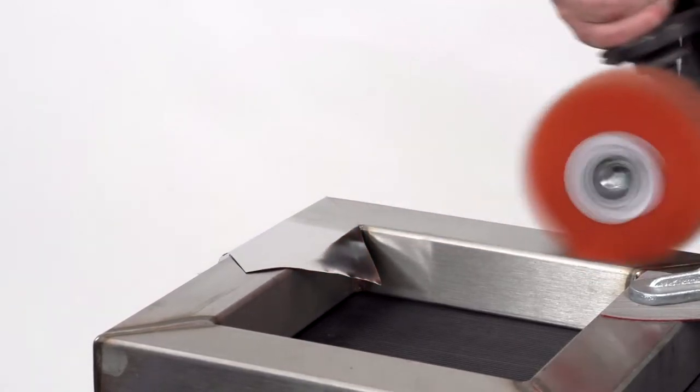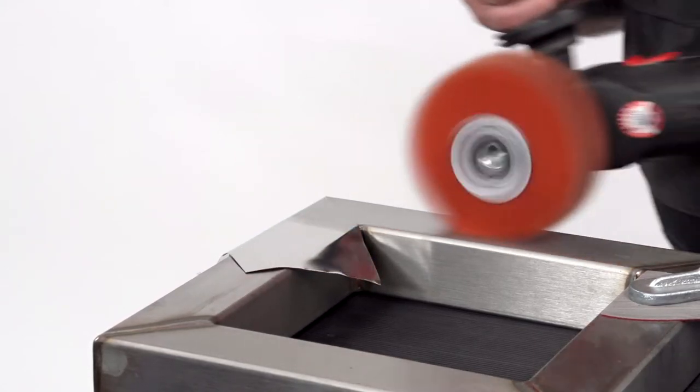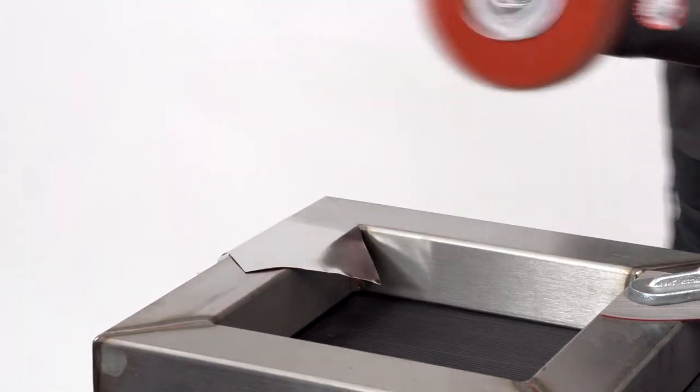Pay attention to the rotational direction of the folded sanding fleece ring so that this does not run against the edge of the stainless steel tape.